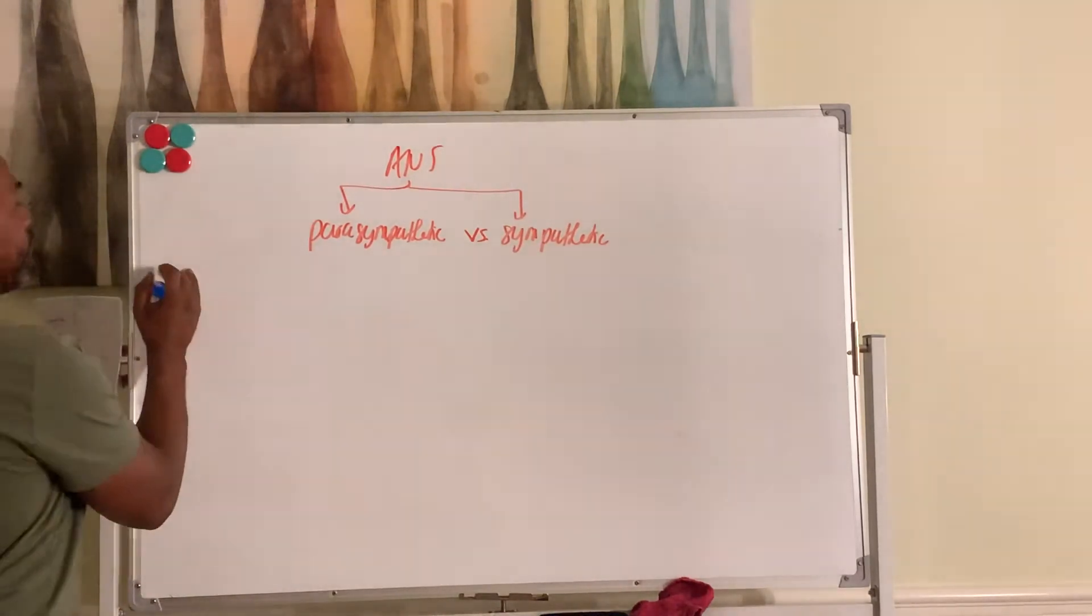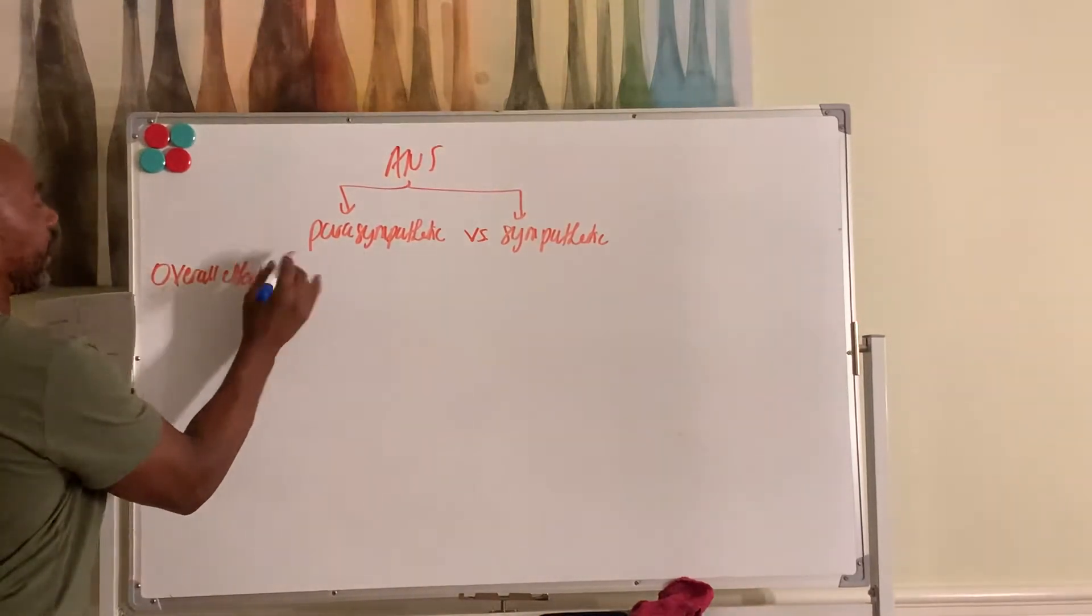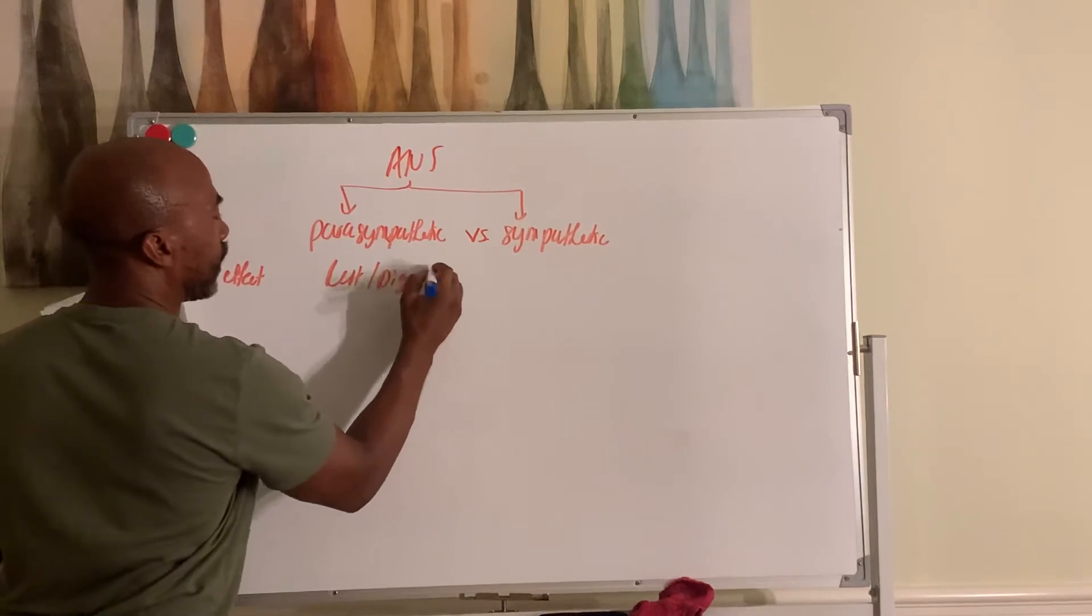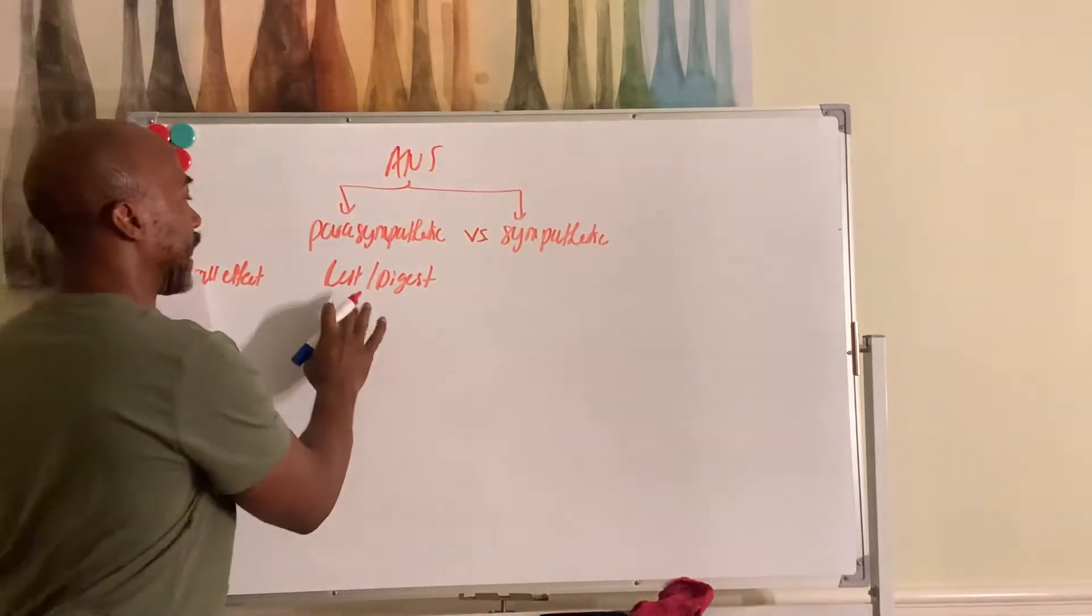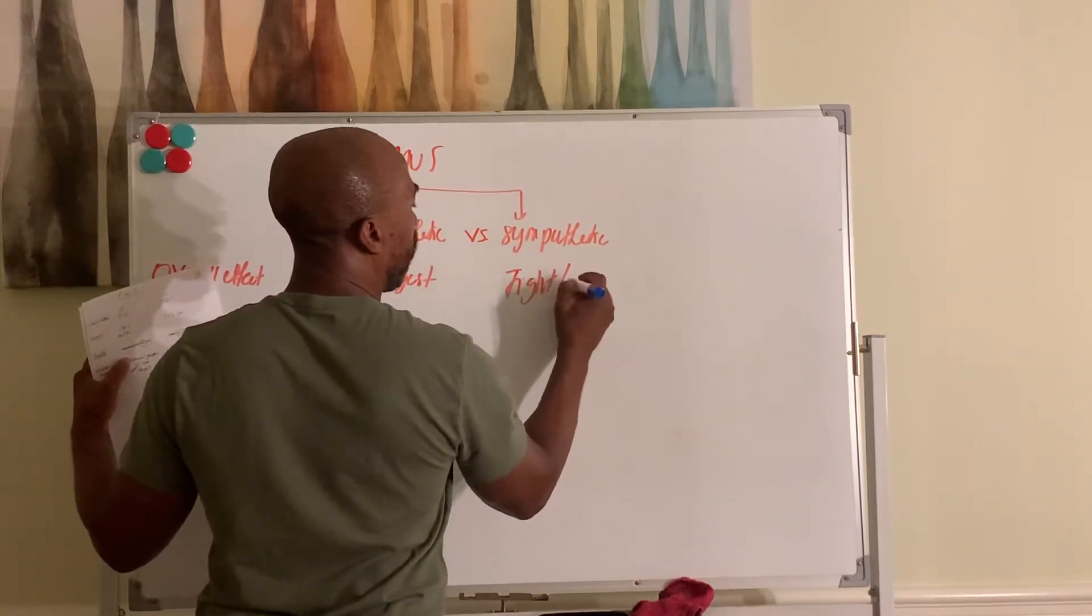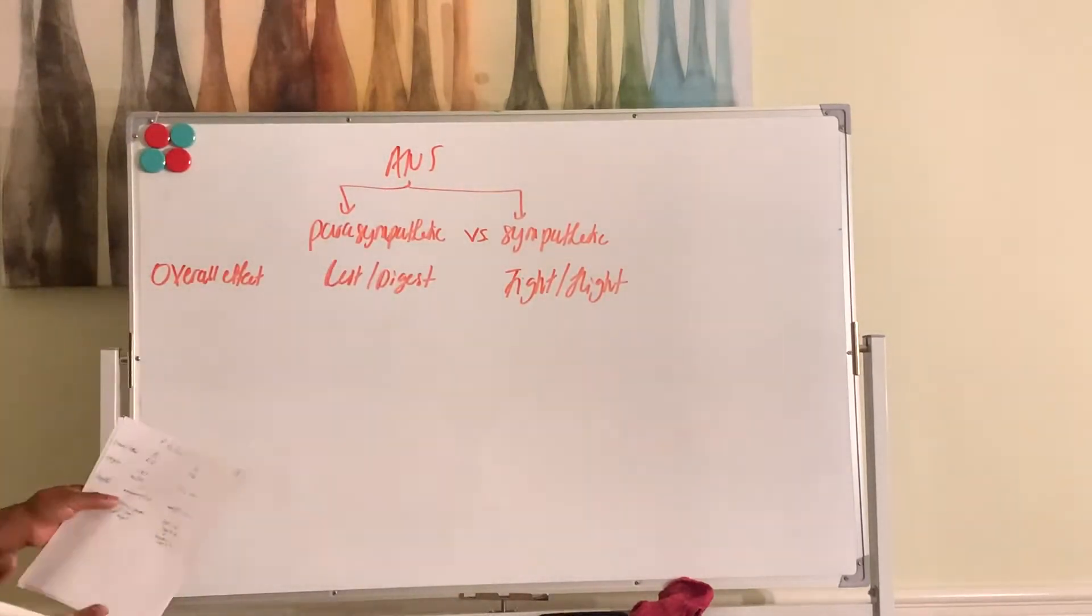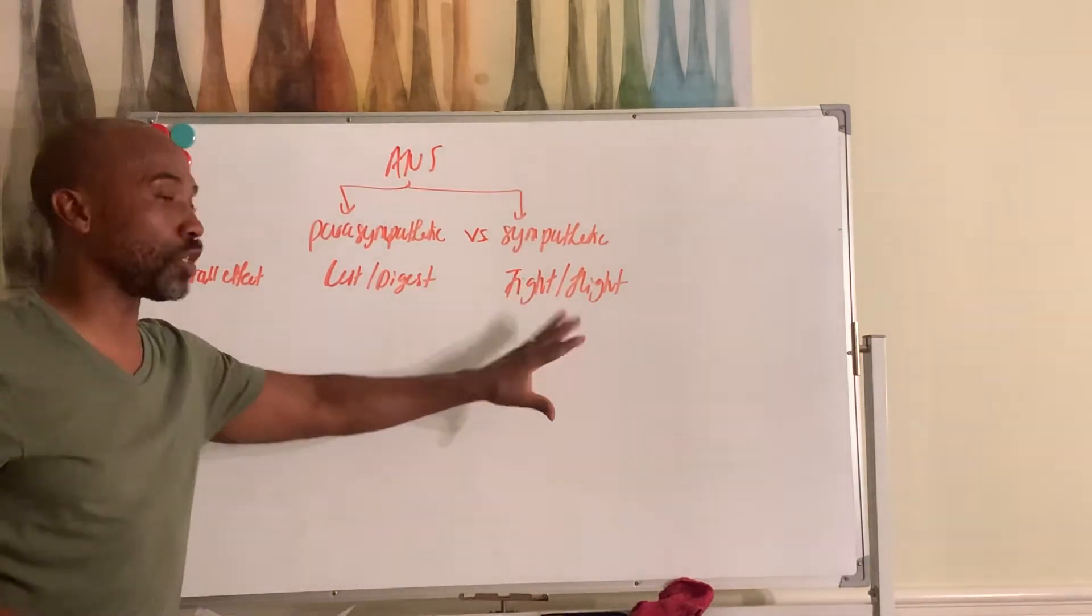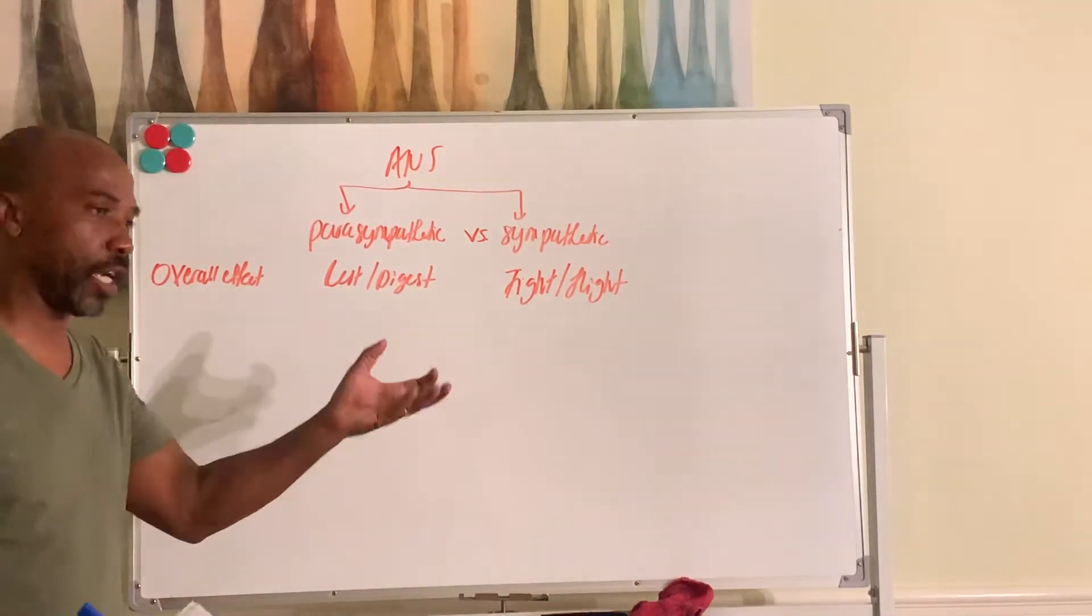In terms of the overall effect that they have, this one is called your rest and digest division. It brings the body back down to baseline. More maintenance. This one, we call it your fight or flight division. It gears the body up for emergencies, for an activity even. So one is to get you pumped. One is to calm you back down. Para calms you down. Simpa gears you up.